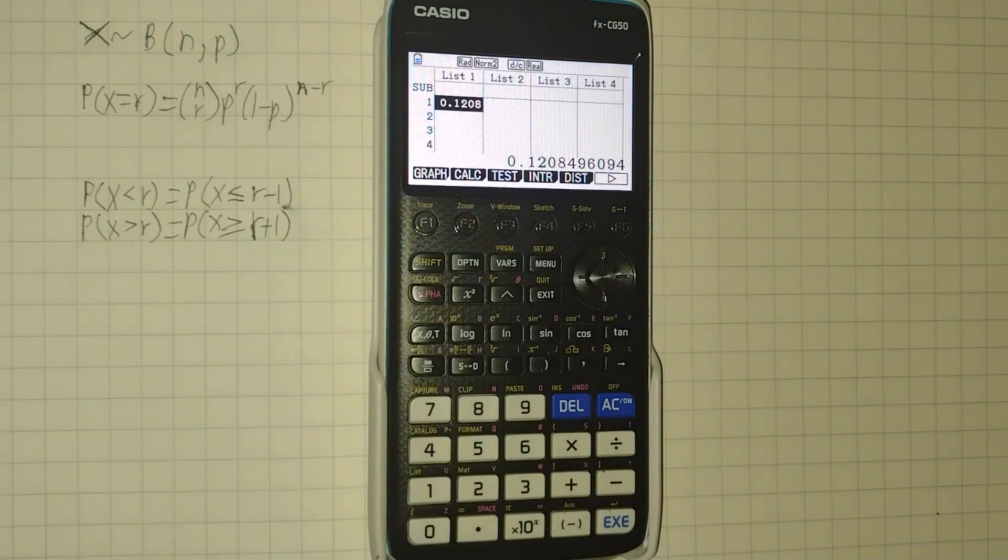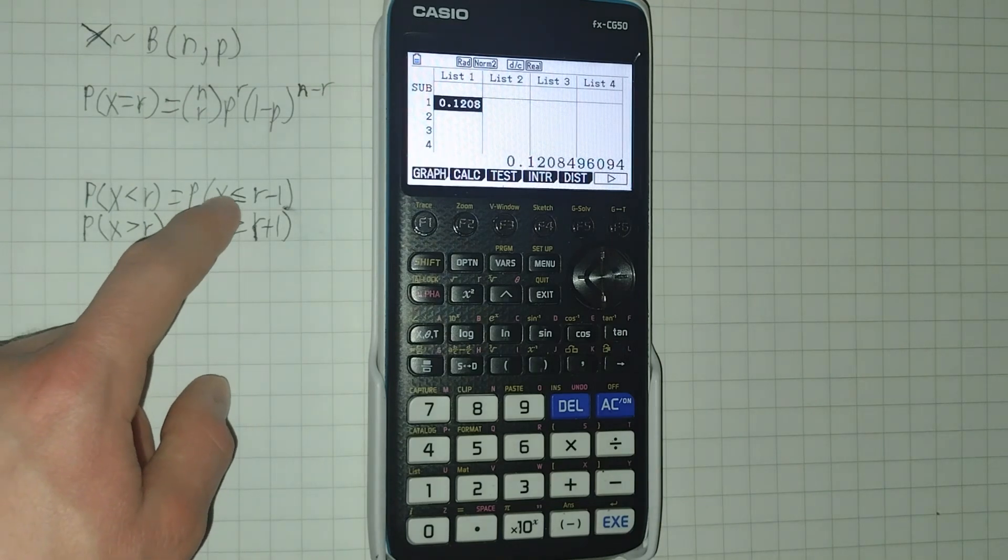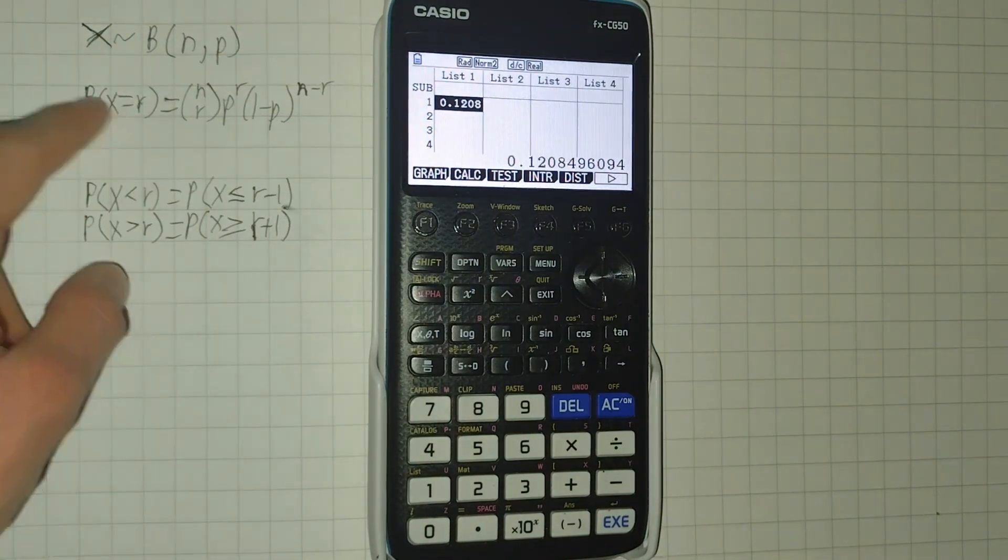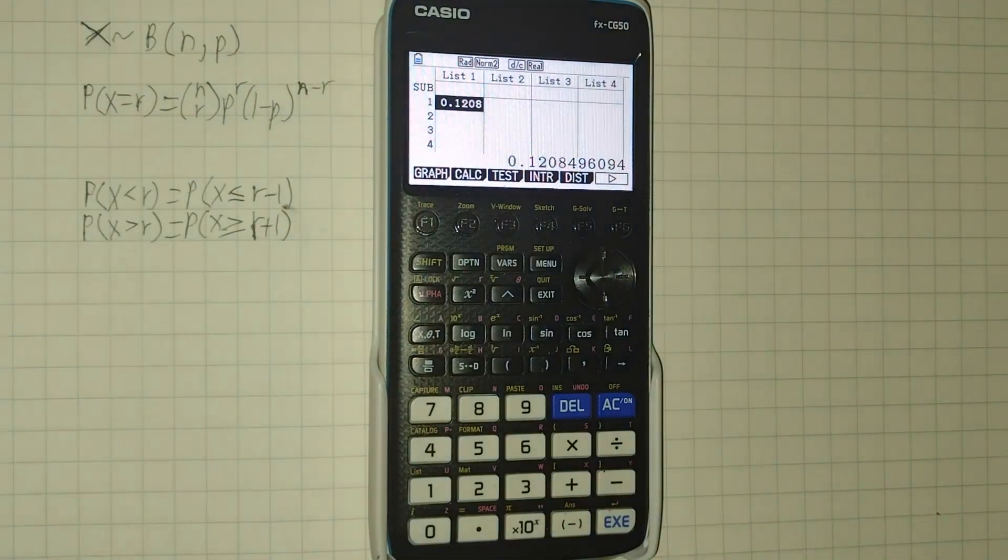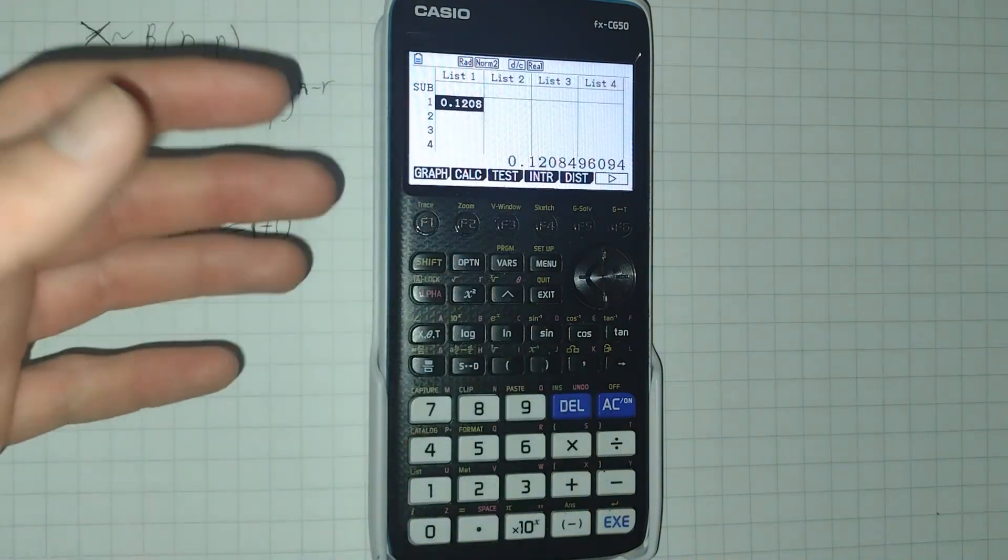Now, you may also sometimes have to calculate cumulative probabilities. So this is where you add up the probabilities of the events occurring a number of times either less than or greater than some boundary value. So, for example, if it's P of X is less than r, this is the same as P of X is less than or equal to r minus 1, and we're adding up the probability of this random event happening r minus 1 times, r minus 2 times, r minus 3 times, and so on, 2 times, 1 times, and 0 times.